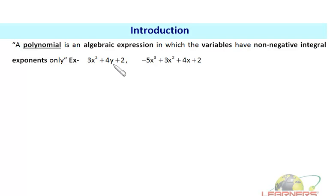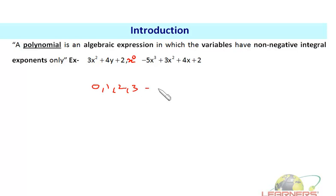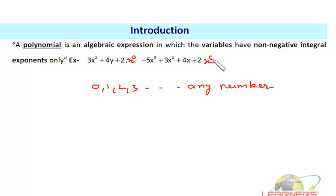The constant 2 has the variable with power 0. So the variable should have powers as non-negative integral values — that is, 0, 1, 2, 3, and so on. Similarly, in −5x³ + 3x² + 4x + 2, x carries powers 3, 2, 1, and 0 respectively. These are all examples of polynomials.